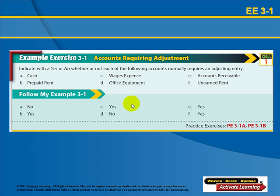Wages expense needs to be adjusted, especially if there are accrued wages. Office equipment does not need to be adjusted. Accounts receivable will need to be adjusted, especially if people have paid or if we need to continue billing for work completed. Unearned rent needs to be adjusted from month to month, especially if you are doing monthly work for someone who has prepaid you in advance.